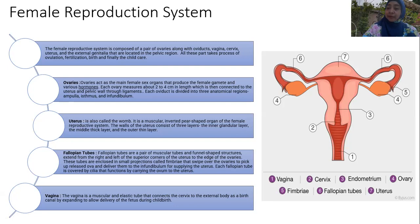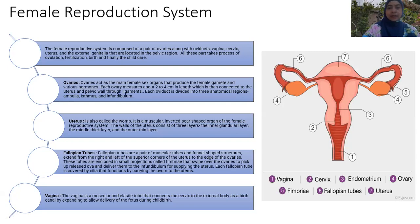The ovaries are the main female sex organs that produce the female gamete and various hormones. The ovary measures about two to four centimeters in length, connected to the uterus and pelvic wall by ligaments. The oviduct is divided into three anatomical regions: the ampulla, isthmus, and infundibulum.